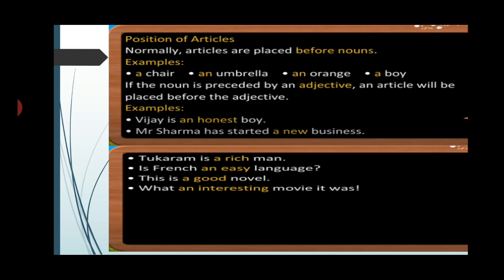Now talking about the position of articles — normally articles are placed before nouns. For example: a chair, an umbrella, an orange, a boy. But if the noun is preceded by an adjective, the article will be placed before the adjective. For example: Vijay is an honest boy — here honest describes the boy, so we put the article before honest. Mr. Sharma has started a new business — we put a in front of new. Tukaram is a rich man. Is French an easy language? This is a good novel. What an interesting movie it was!